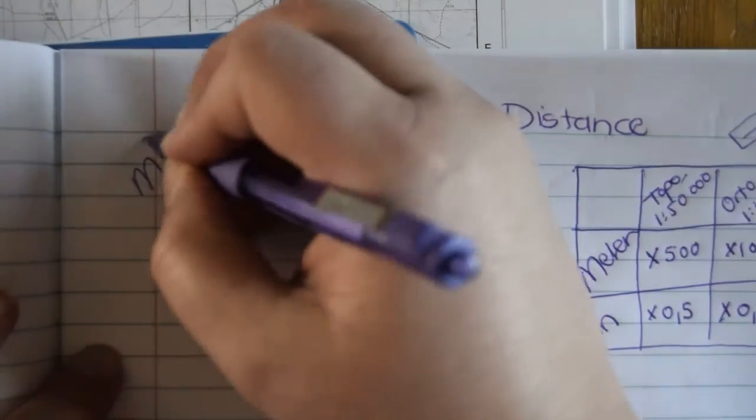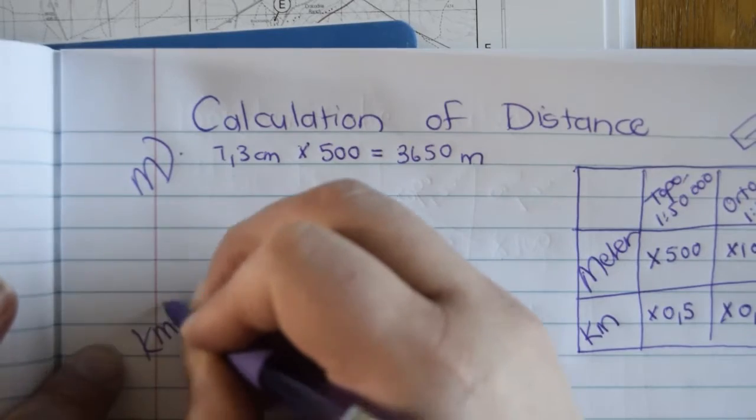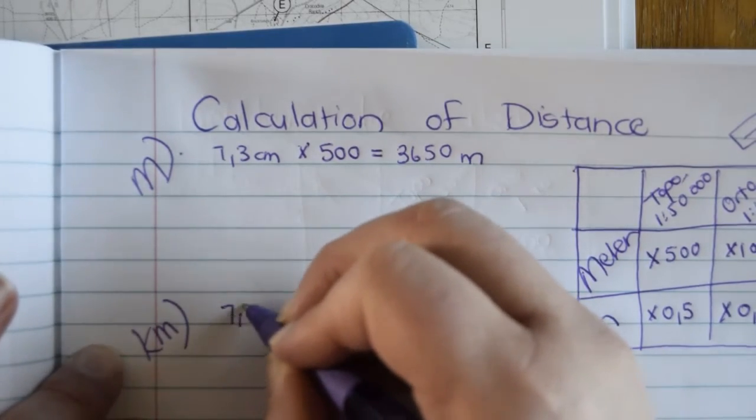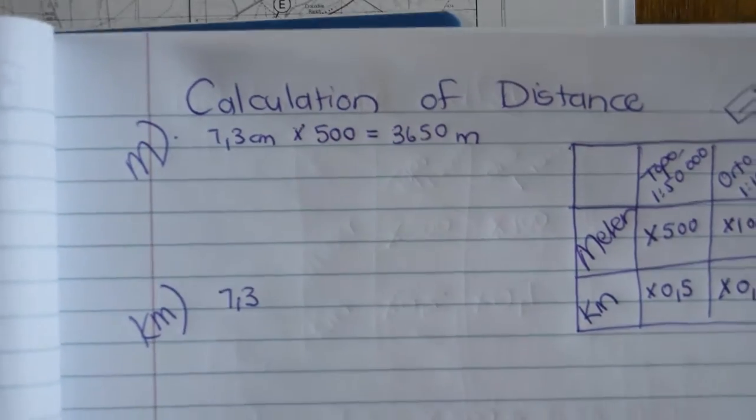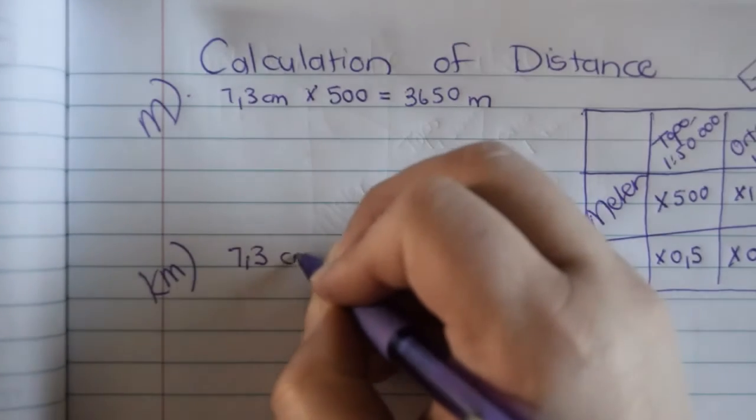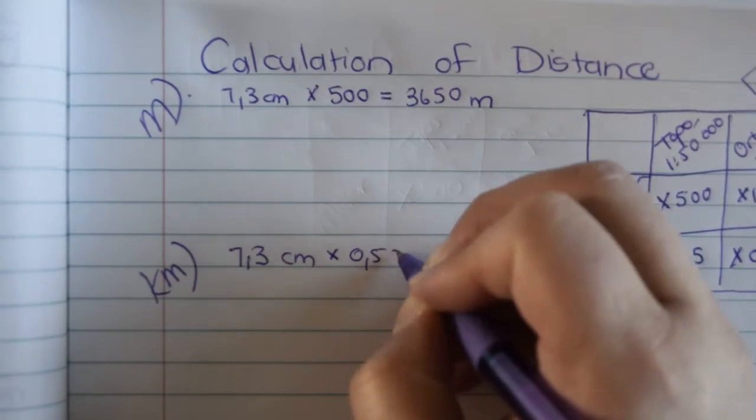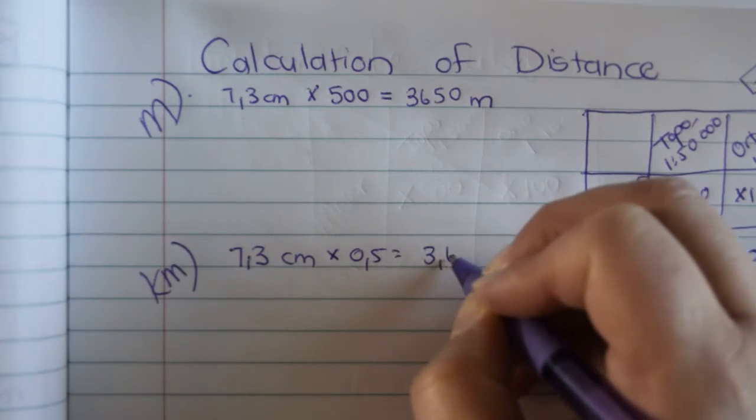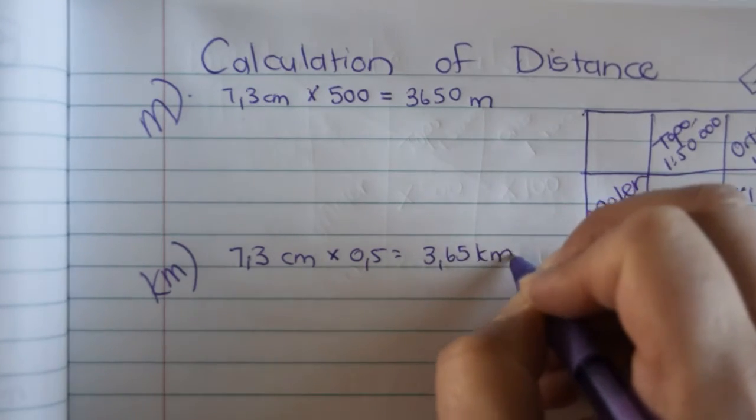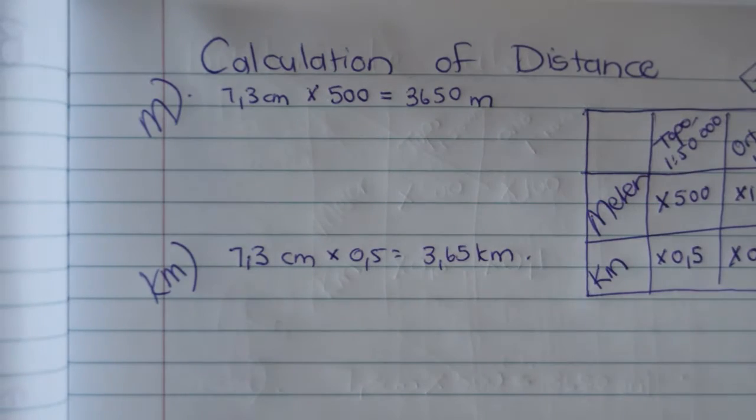Okay. If it was kilometers, you would have said 7.3 centimeters multiplied by 0.5 and you would have gotten 3.65 kilometers. All right. So please just make sure what does the question ask? Does the question ask in meters or in kilometers?